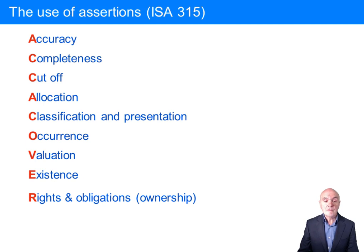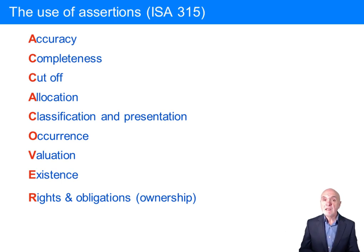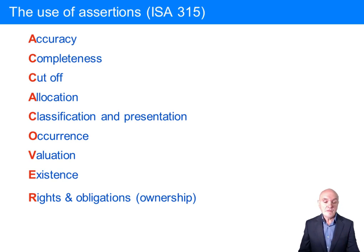Allocation is important in inventory to make sure that we feed into manufactured inventory the right amount of labour and fixed factory overhead. Classification and presentation — are we describing the inventory correctly? Have we got the split between raw materials, finished goods, and work in progress done properly? Are we making the presentations required by statute or by accounting standard? Occurrence is more to do with items in the statement of profit and loss.